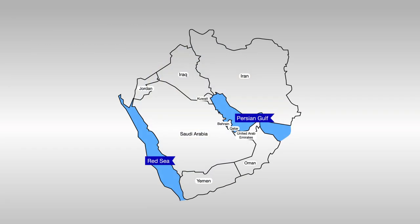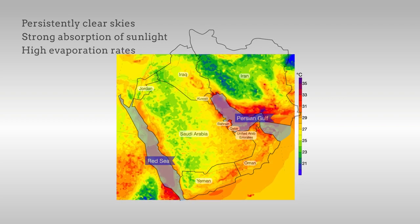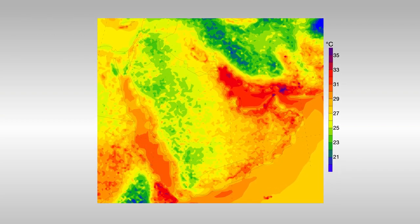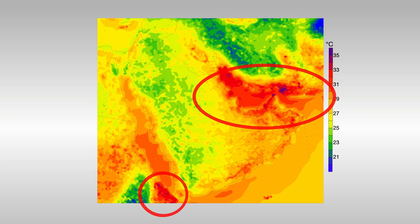But over the Persian Gulf and Red Sea, persistently clear skies, strong absorption of sunlight, and high evaporation rates combine to maximize the flow of heat over these regions, producing wet bulb temperatures that have historically exceeded 31 degrees Celsius.